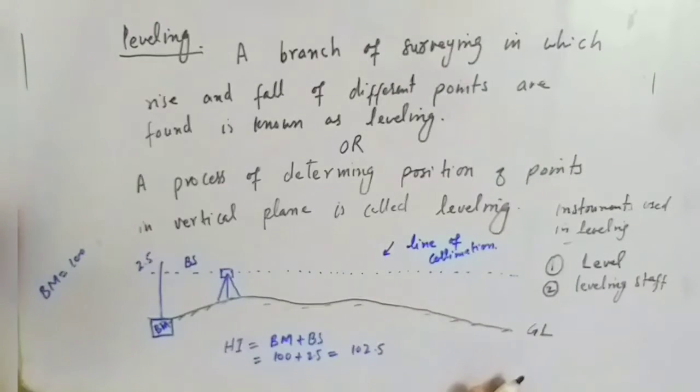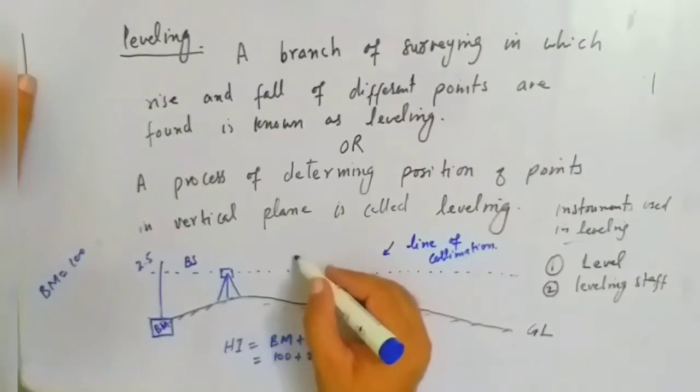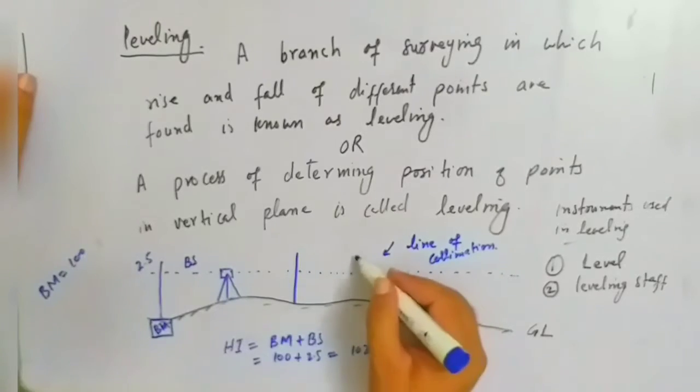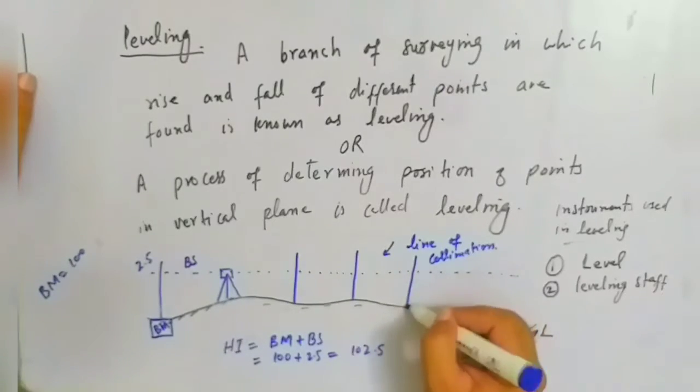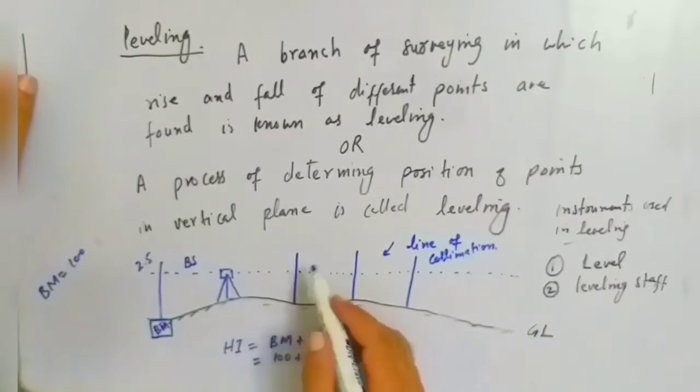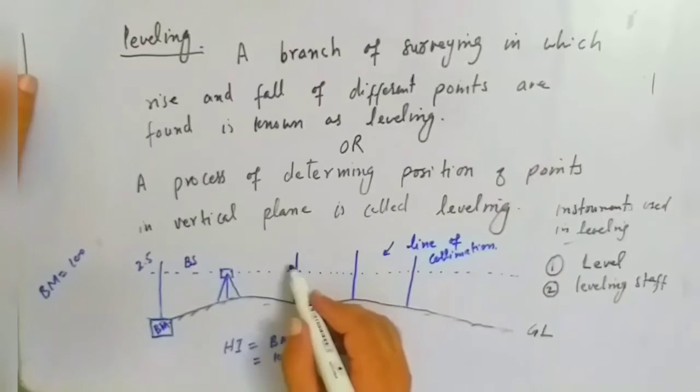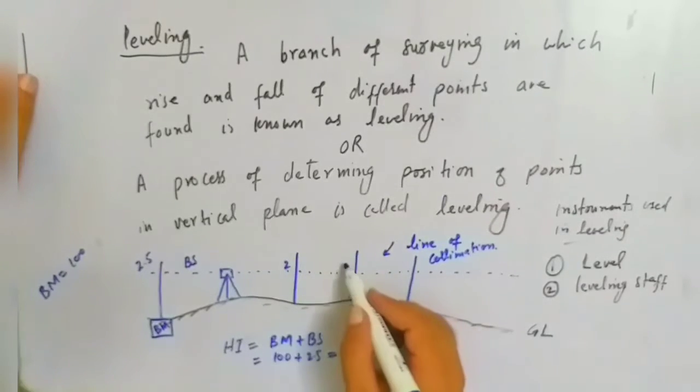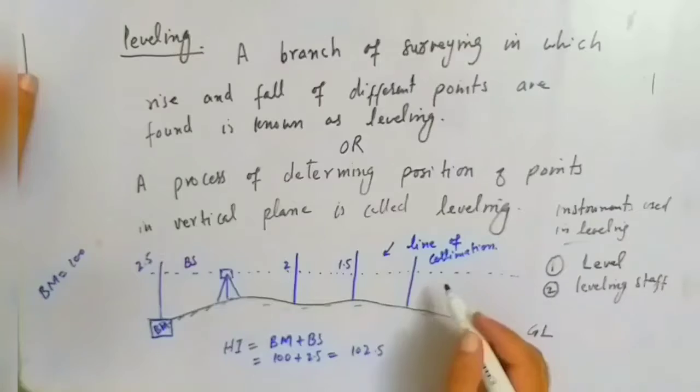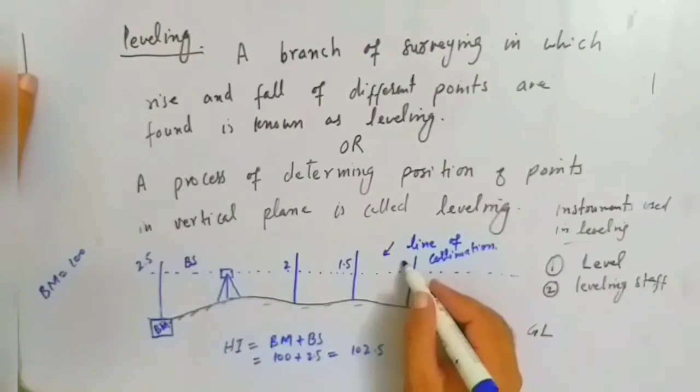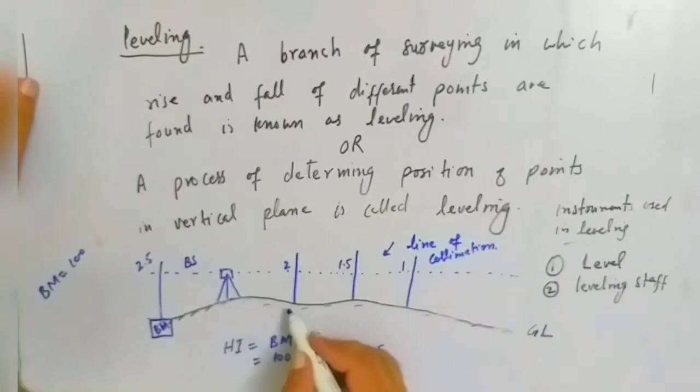Now another reading: the reading between backsight and foresight is known as intermediate sight, and the last reading taken on the level is called foresight.